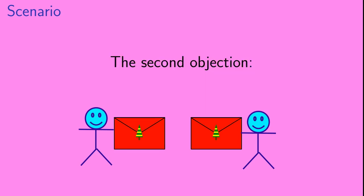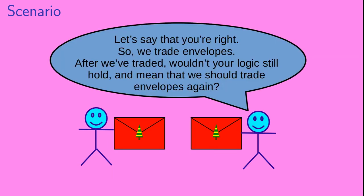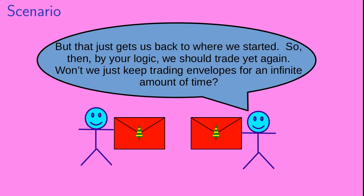And now your second objection: again, let's say that you're right. So we trade envelopes. After we've traded, wouldn't your logic still hold and mean that we should trade envelopes again? But that just gets us back to where we started. So then by your logic we should trade yet again. Won't we just keep trading envelopes for an infinite amount of time?